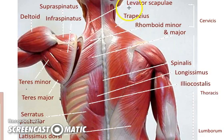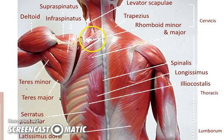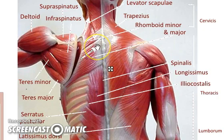Let's look at the levator scapulae — we'll start at the top. Good name because it means 'lift the scapula.' Attached to the border of the scapula, it's going to elevate the scapula. The rhomboid minor and major are also involved in the scapula, and they're going to adduct the scapula, which means bring it to the midline. Again, the action is to oppose the muscles in the front of the body.